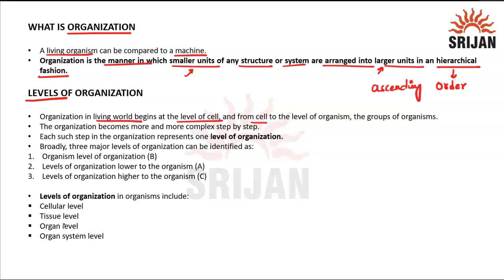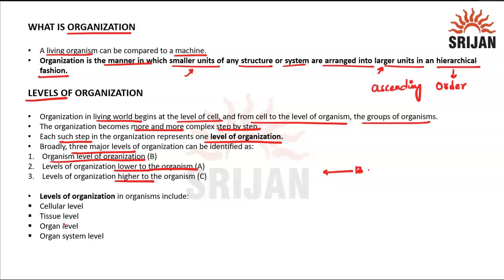Organization in the living world begins at the level of the cell, from cell to the level of organism, then the group of organisms, becoming more and more complex at every step. When talking about the living world, it is not limited to just you but also your surroundings and how you interact with them. Usually we have three major levels: the organism level, the level lower to the organism, and the level higher to the organism. For humans, below is the cell and above is the biosphere.